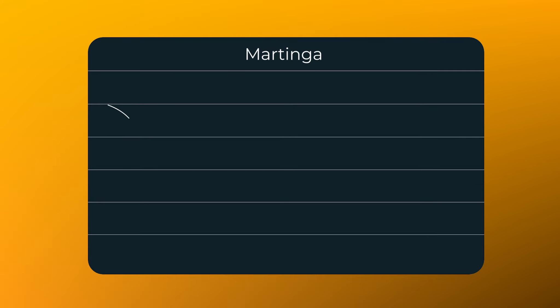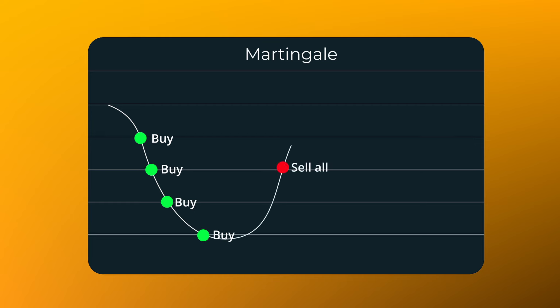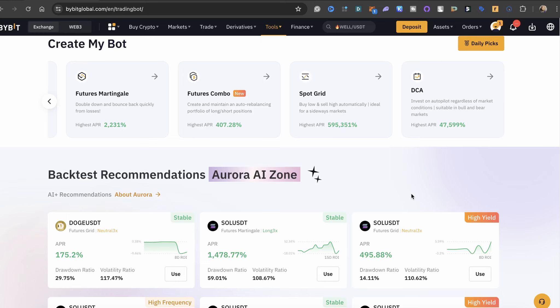Futures Martingale works differently. There is no upper and lower limit. As price drops, it adds to the position along the grid, and when price rises, it closes it all once the target profit is attained. Let's go to some practical examples for more clarity.